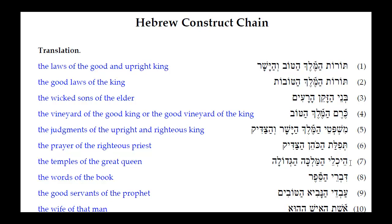Number seven: Hekele HaMalka HaGadula. We immediately look at the Kamets He ending on the adjective HaGadula. It can only agree with HaMalka, the queen, because Hekele is masculine plural for 'temples.' So the adjective is agreeing with the feminine singular absolute noun HaMalka. We would say 'the temples of the great queen.'